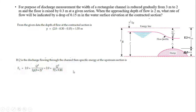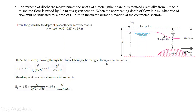At the contracted section, the specific energy is E₂ at critical conditions with depth yc = 1.55 m. The discharge Q is the same, but the area changes with width reduced to 2 m and depth 1.55 m. Thus E₂ = 1.55 + Q²/(2g × (2×1.55)²) = 1.55 + Q²/(19.22 × 9.81).